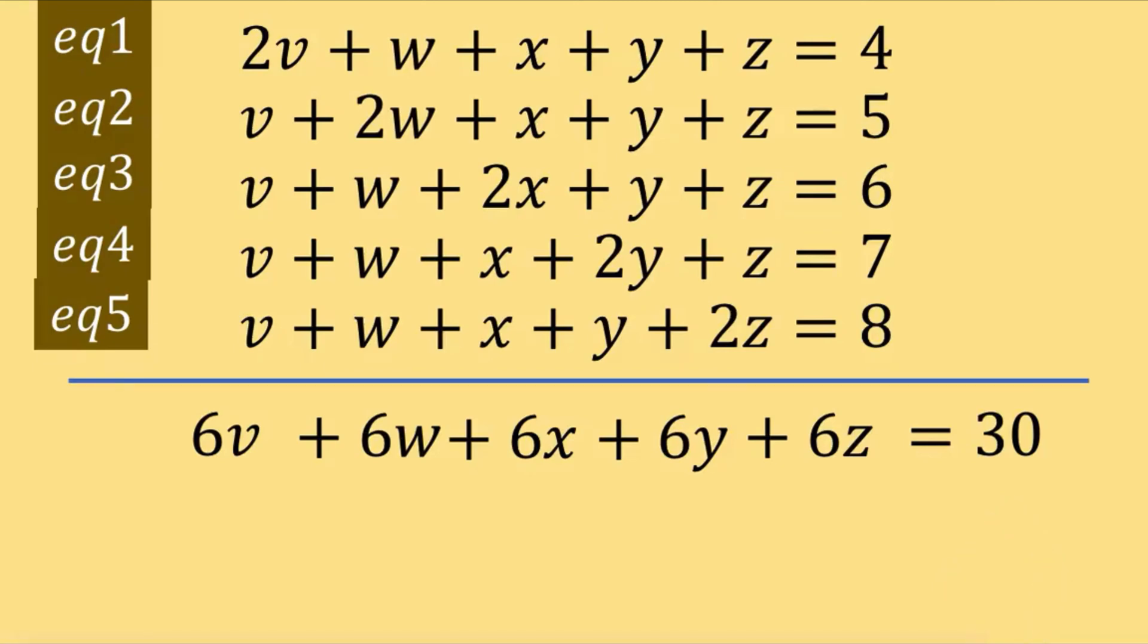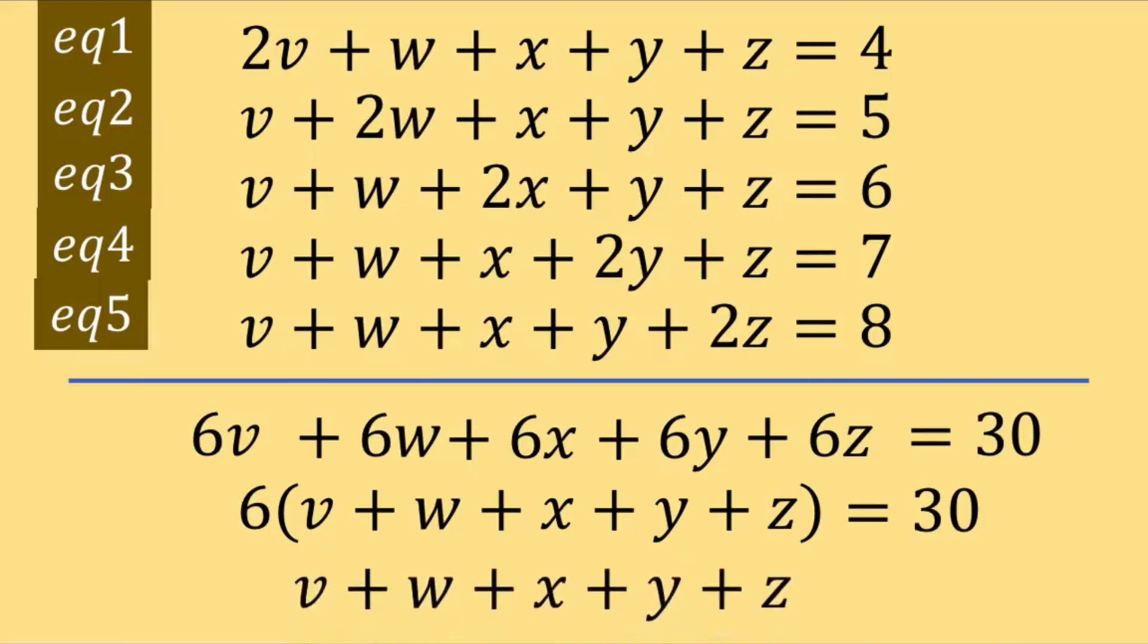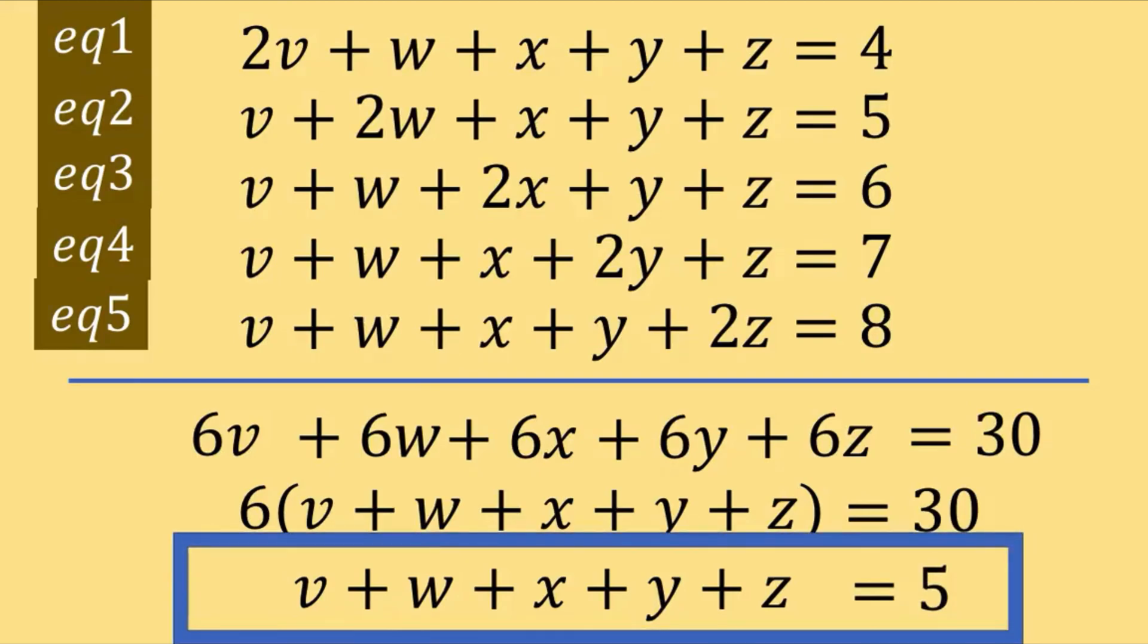Notice that 6 is a common factor, so we can factor that out. And we arrive at 6 times the quantity v plus w plus x plus y plus z equals 30 divided by 6, which is 5. Now, let's remember this value. The sum of all these five variables is equal to 5.